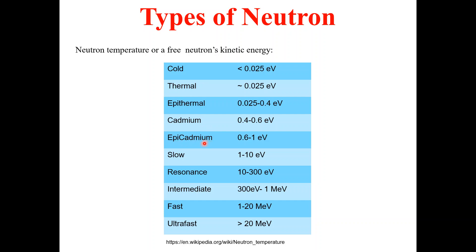Then we have epi-cadmium neutrons. Epi-cadmium neutrons are those neutrons which have energy in the range of 0.6 to 1 electron volts. After that, we have slow neutrons. Slow neutrons are those neutrons which have energy in the range of 1 to 10 electron volts.